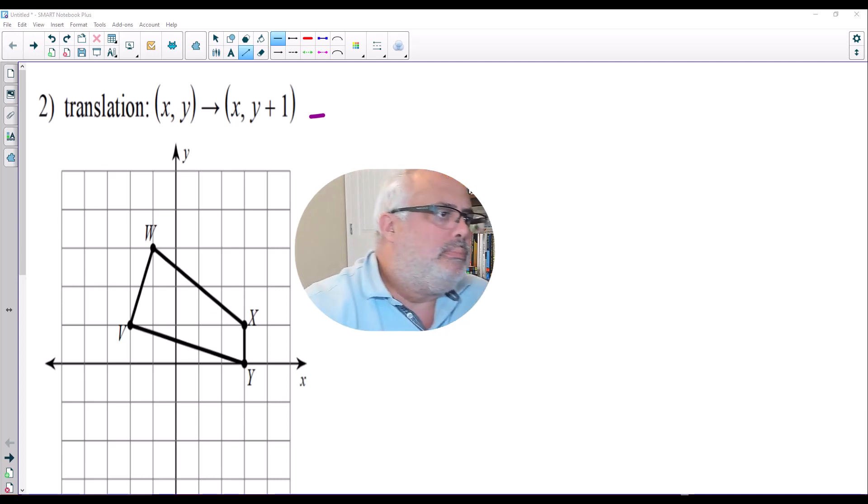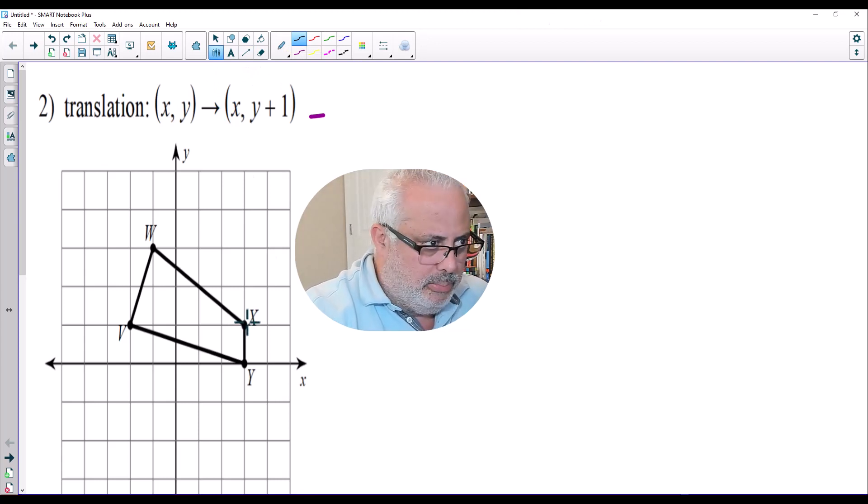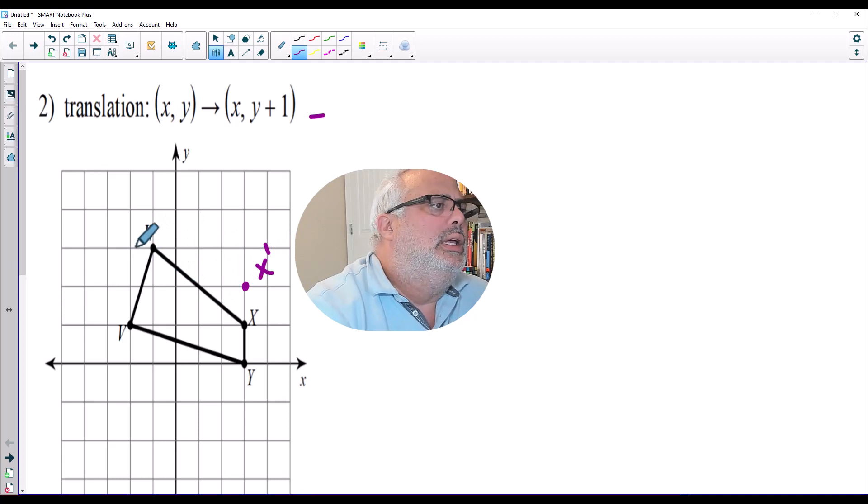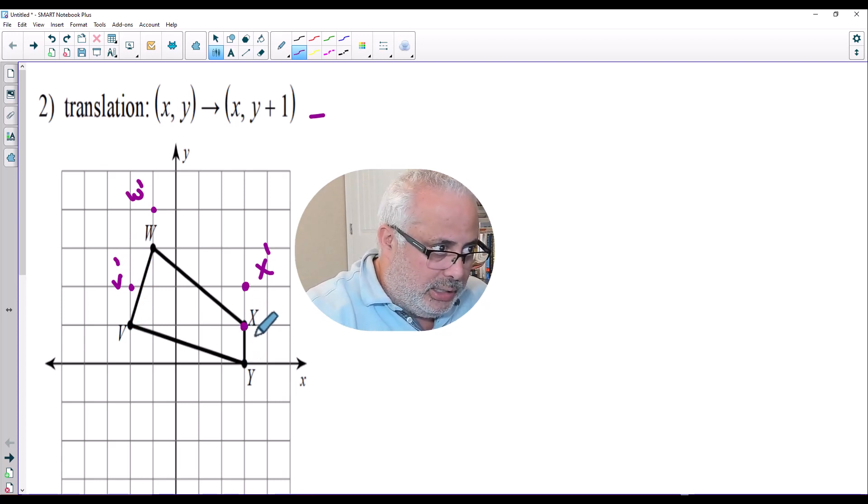Let's do it. So I'm going to start with the X vertex. I'm going to move it up one unit. Let me use a different color here. That will be x-prime. W, I'm going to move it up one unit. It will be w-prime. V will be moving one unit. That will be v-prime. And Y will be moving one unit, and it will be here. That will be y-prime.